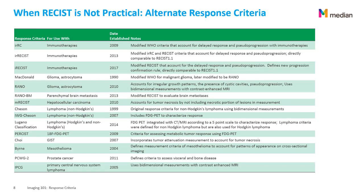For certain drug classes or types of cancers, evaluating response with RECIST 1.1 is not practical or meaningful. This is particularly true for some modern drug targets such as immunotherapies, tyrosine kinase inhibitors, and angiogenesis blockers that tend to stabilize disease but not cause tumor shrinkage, as well as for tumors that do not grow in easily measurable spheres, or whose invasive natures make identification of tumor margins difficult.